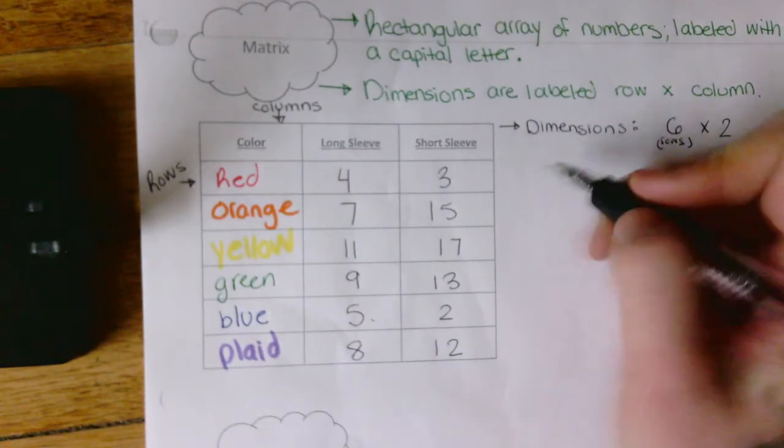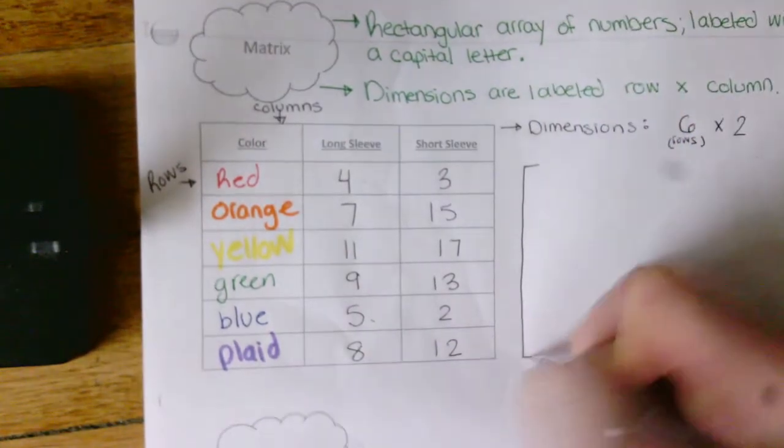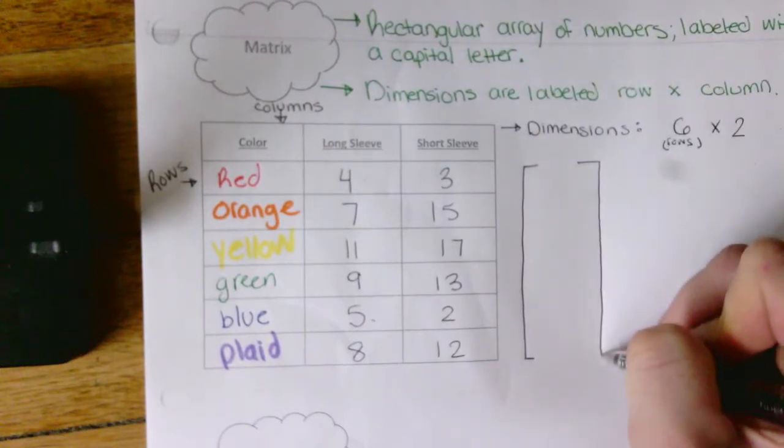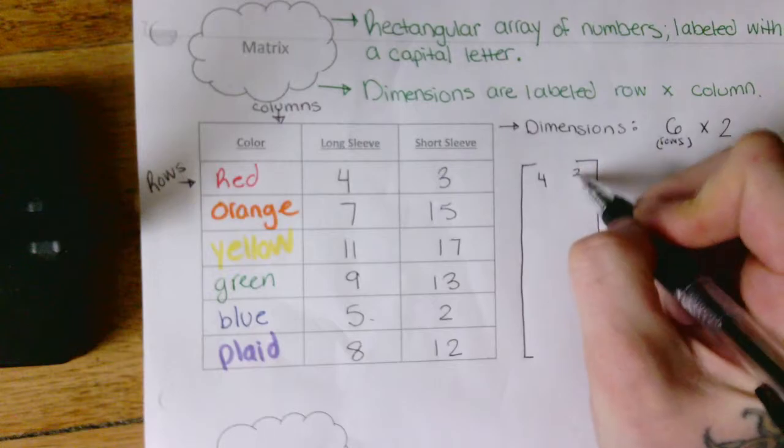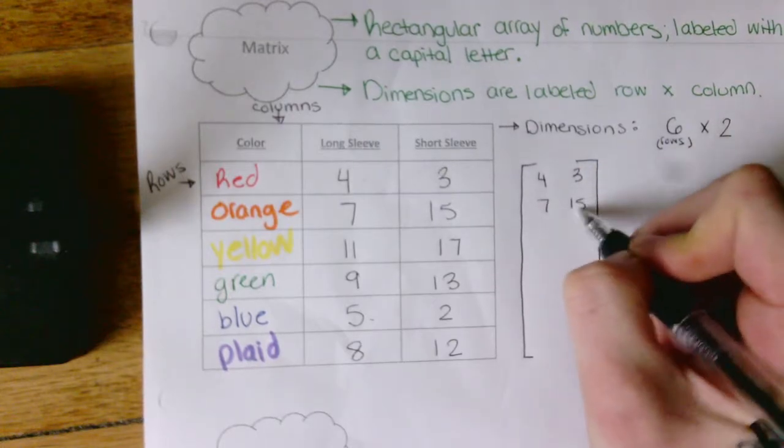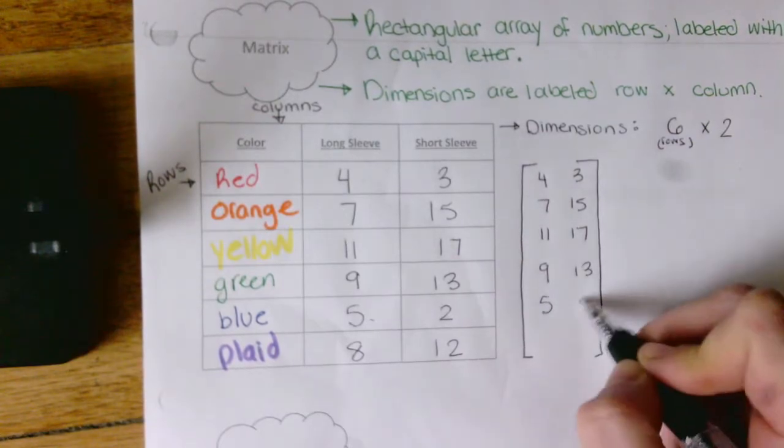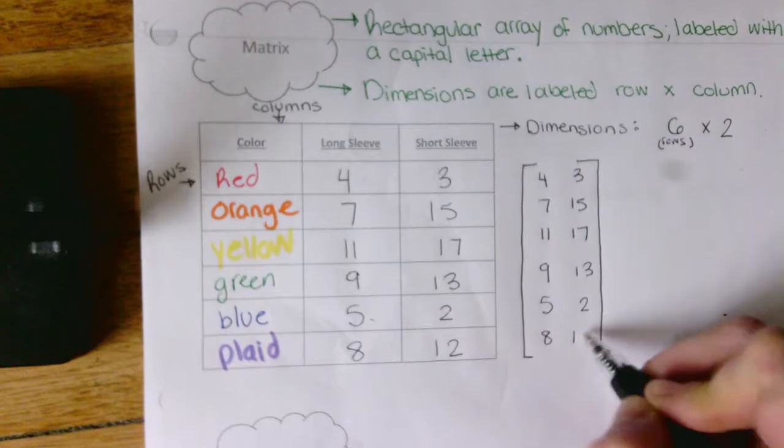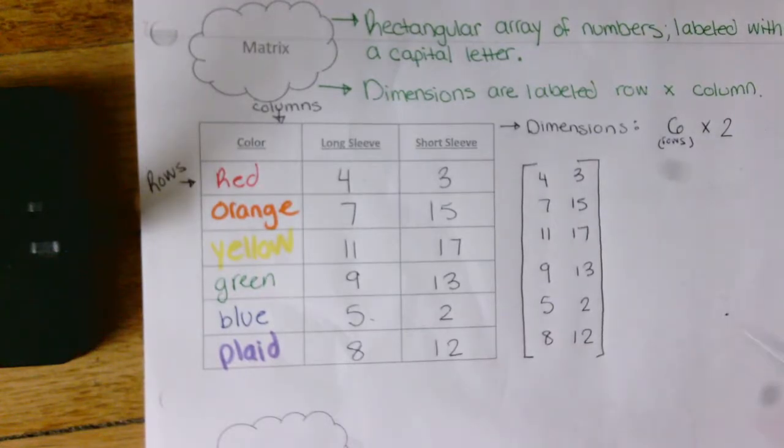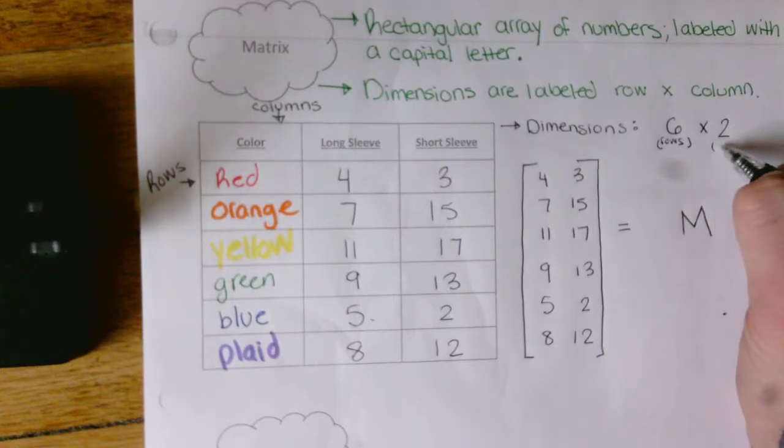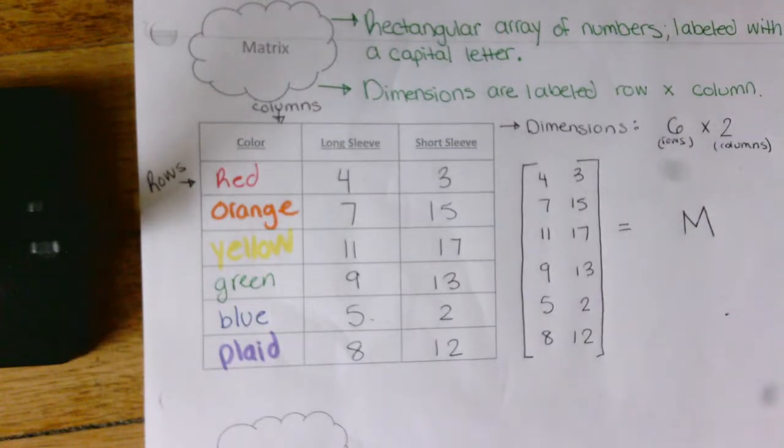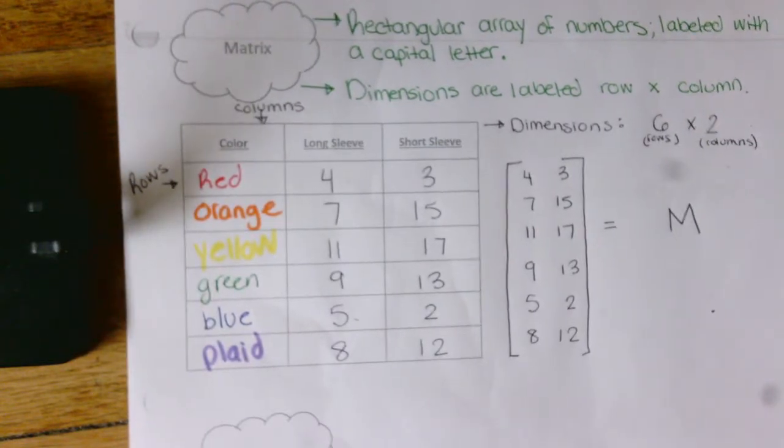Okay, so if I write this as a six by two, all I'm going to do is just keep the numbers exactly where they are and remove the table lines, grid lines, whatever you want to call them. Okay, so let's just call this matrix M. So it's got six rows, two columns. And this is our vocabulary for a matrix.